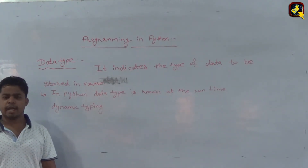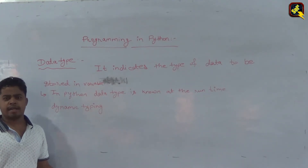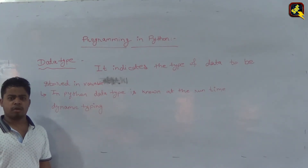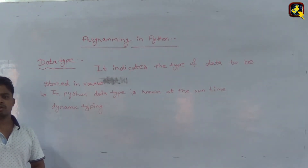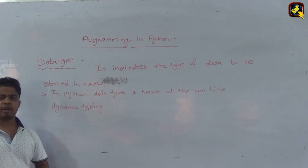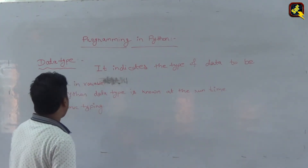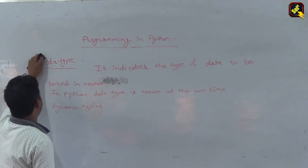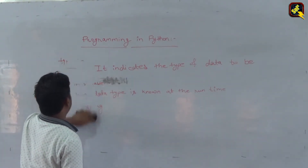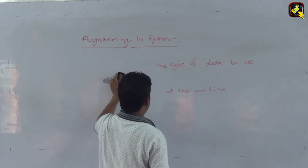This property is called dynamic typing. During run time, the data type is determined. So we say the type is determined at run time. Now we will see what are the different types of data typing in Python.